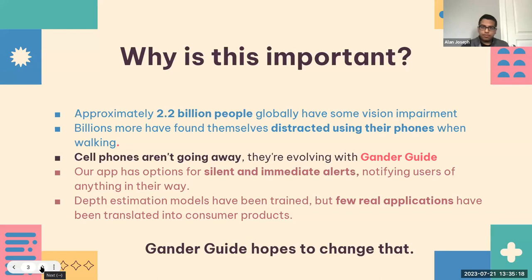Vision impairment is a serious problem. Approximately 2.2 billion people globally have some kind of vision impairment. Billions more, while not visually impaired, find themselves distracted using their phones when walking. But cell phones aren't going to go away — rather, they're evolving with our app, Gander Guide.